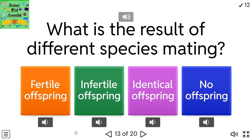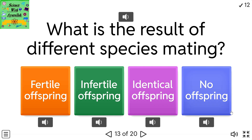What is the result of different species mating? Options: fertile offspring, infertile offspring, identical offspring, no offspring.